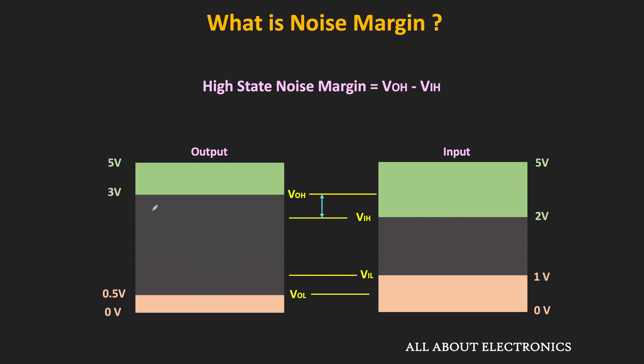That means if the output of the first gate is equal to 3V, then it can tolerate noise of 1V. But if because of the noise the input voltage goes below 2V, then the second gate will not recognize it as logic 1. So we can say that the noise margin is equal to 1V — that is the difference between VOH and VIH. And this noise margin is known as the high state noise margin, because in this case the output of the logic gate is equal to high.